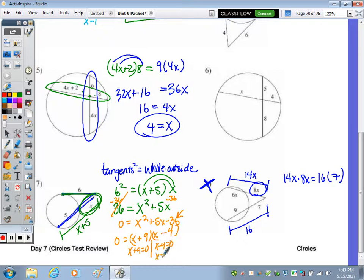Take each factor, set it equal to 0. And we add 4, get x is 4, subtract 9, get x is negative 9. But we can't have a negative x because it represents the length. So we have a value of x equals 4.